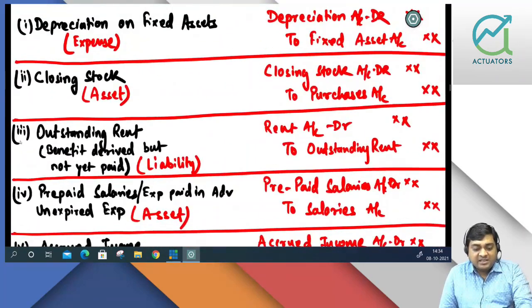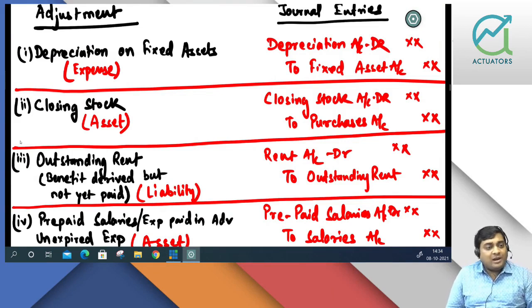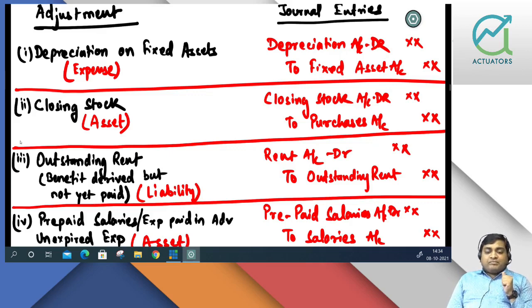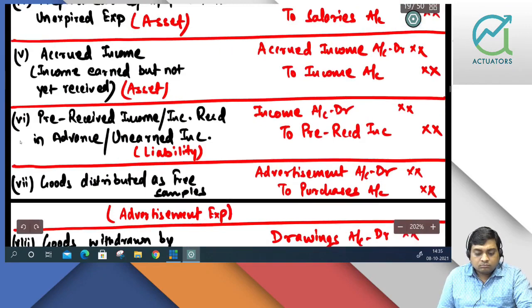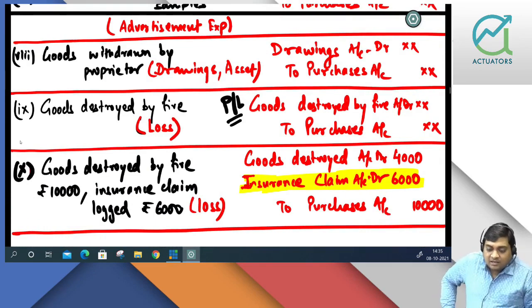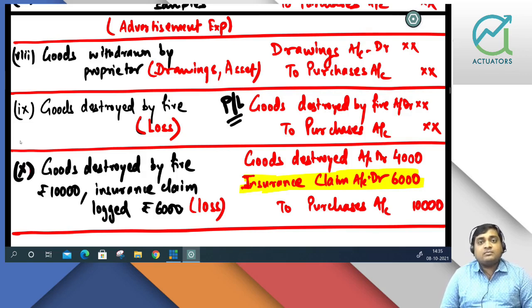So these are some of the adjustment entries. You are going to use these when you do final accounts. The basic adjustments are depreciation, stock, adjustments with respect to expenses, and adjustments related to goods destroyed by fire. Provision for bad debt will be covered later in a separate class. These adjustment entries are not recorded, so you can either incorporate them in the trial balance and then prepare final accounts, or directly prepare final accounts and show two effects of each adjustment. That's it for today; in the next session we will be starting with some other topic.